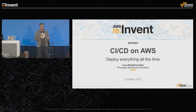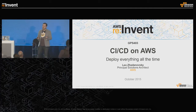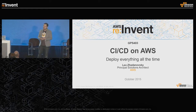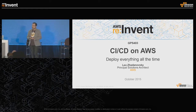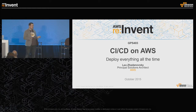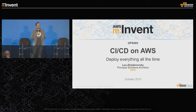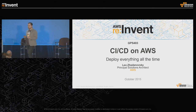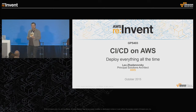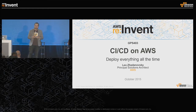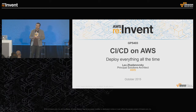Welcome to the Continuous Integration, Continuous Delivery on AWS Talk here at the Global Partners Summit. I'm Leo Zdanovsky, a Principal Solutions Architect here at AWS. I'm going to be talking to you today about how to do CI and CD on AWS, and I'm specifically going to be giving you a live demo of some of our new tools: CodePipeline and CodeDeploy.